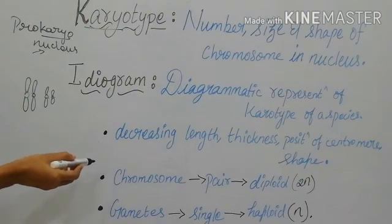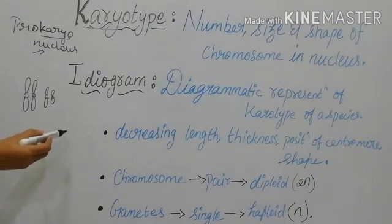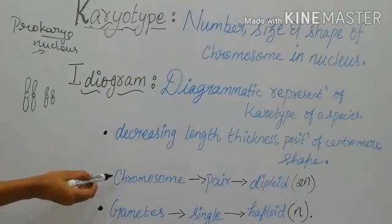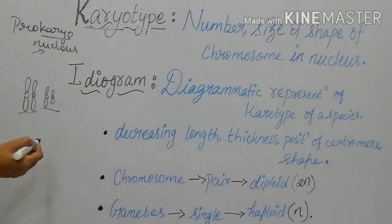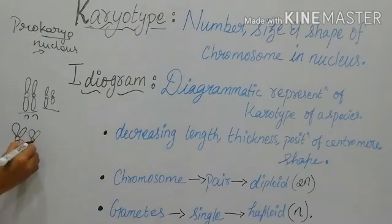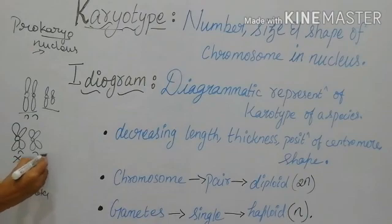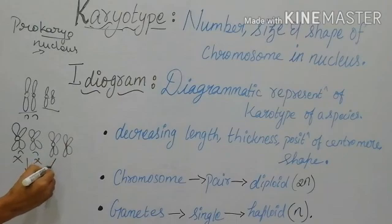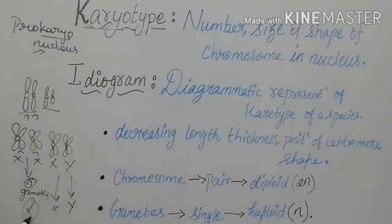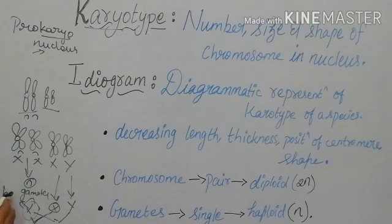Chromosomes are always present in pairs — this paired condition is called diploid, that is 2N. During reproduction, only one chromosome from each pair comes out, forming a gamete — that single set is called a gamete. The mother forms one gamete and the father forms one gamete, contributing either X or Y. This single set condition is called haploid. When two gametes fuse, they form a zygote.